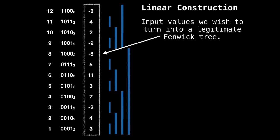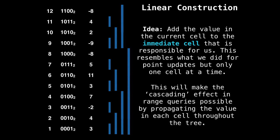In the linear construction, we're going to be given an array of values we wish to convert into a legitimate Fenwick tree, not just the array of values themselves. And the idea is we're going to propagate the values throughout our Fenwick tree in place. And we're going to do this by updating the immediate cell that is responsible for us.